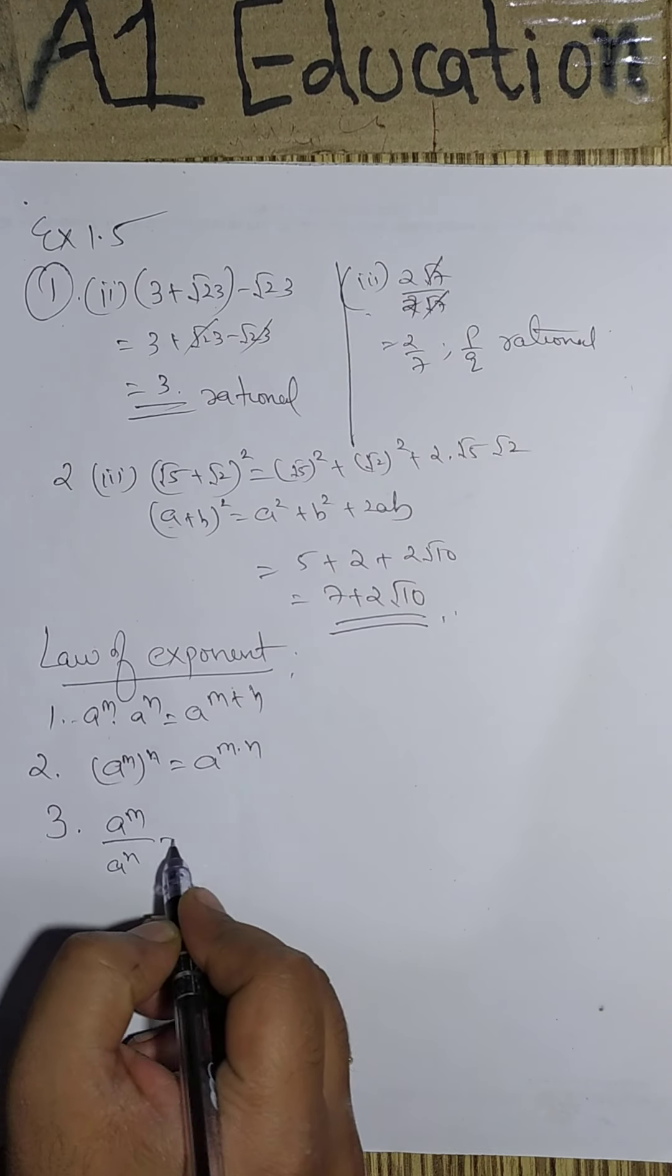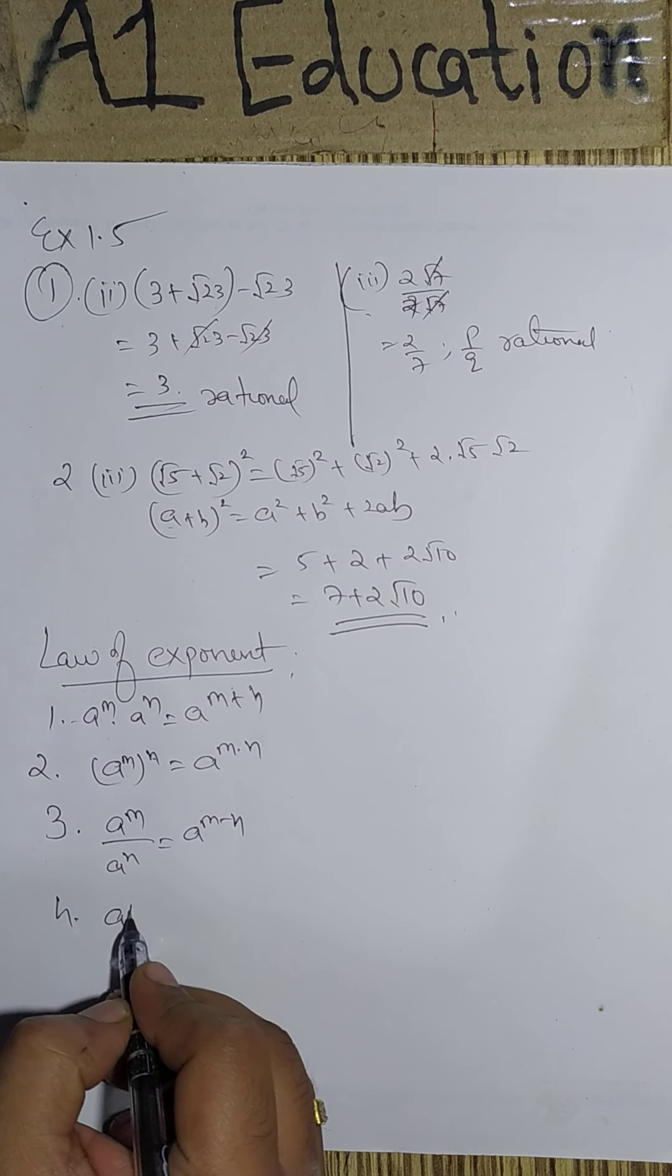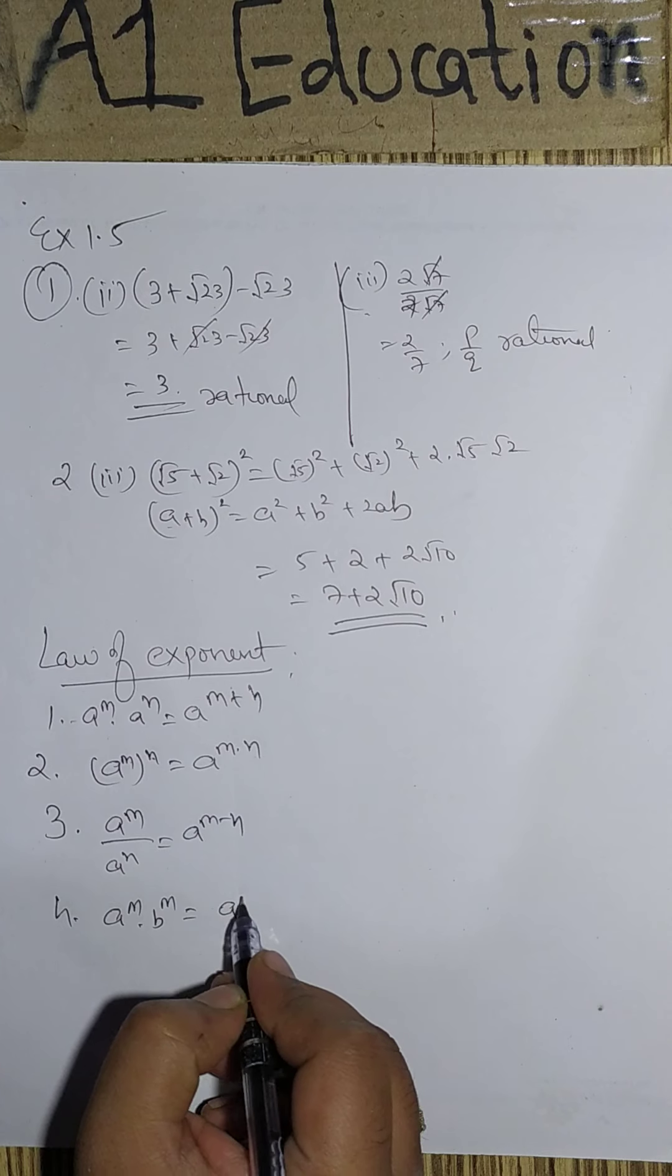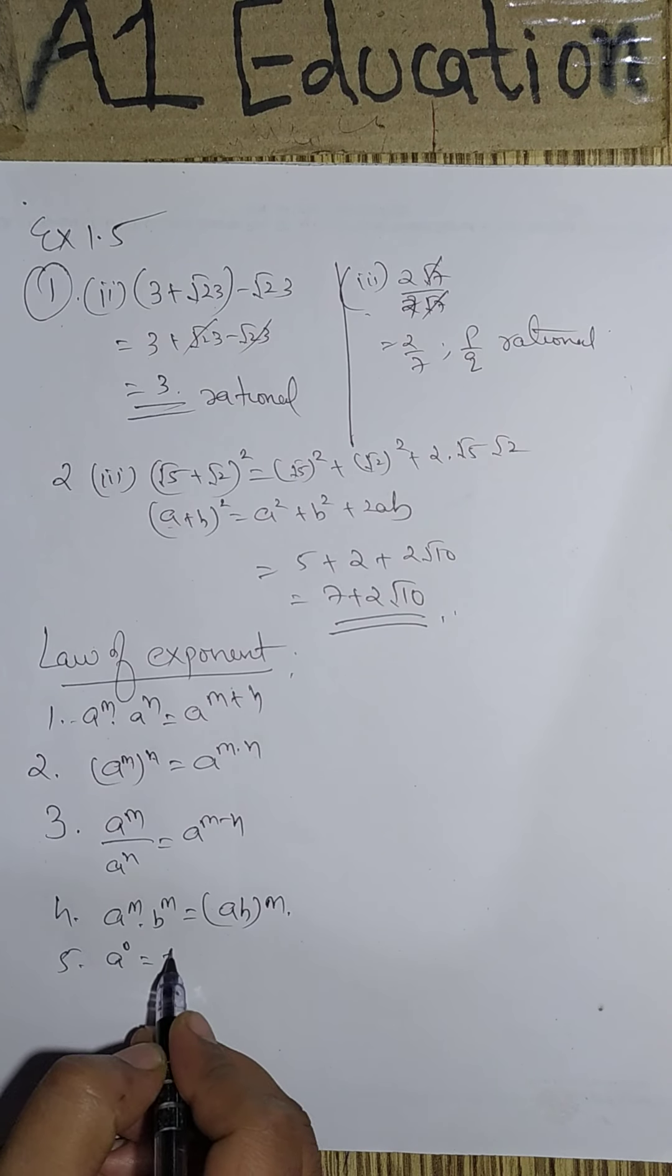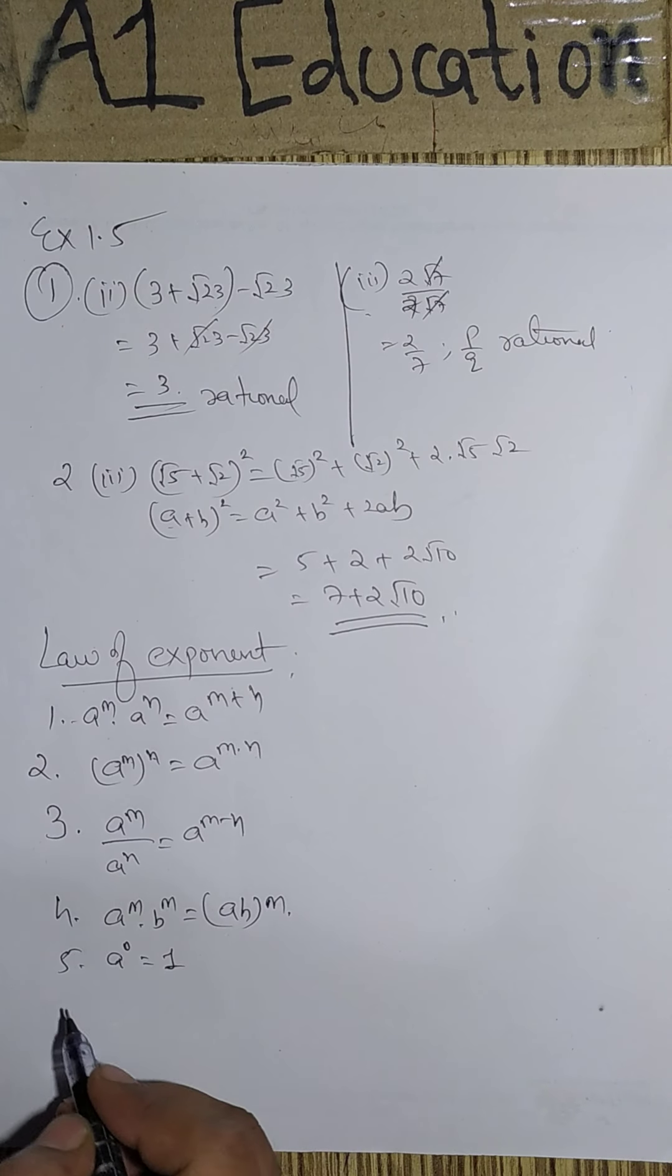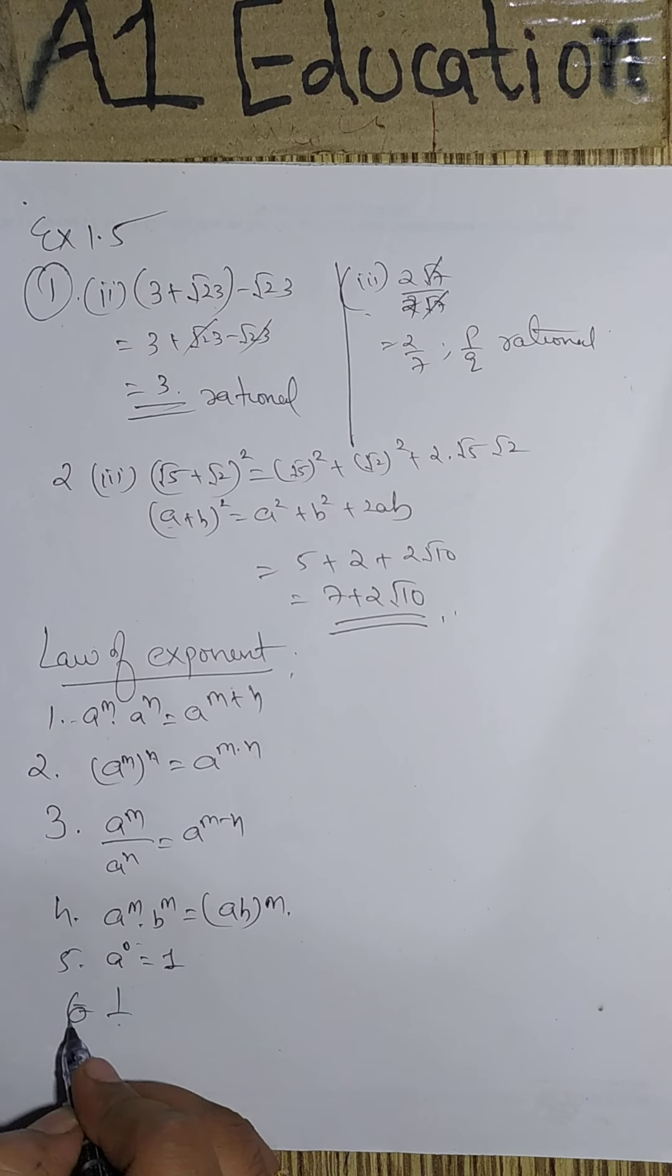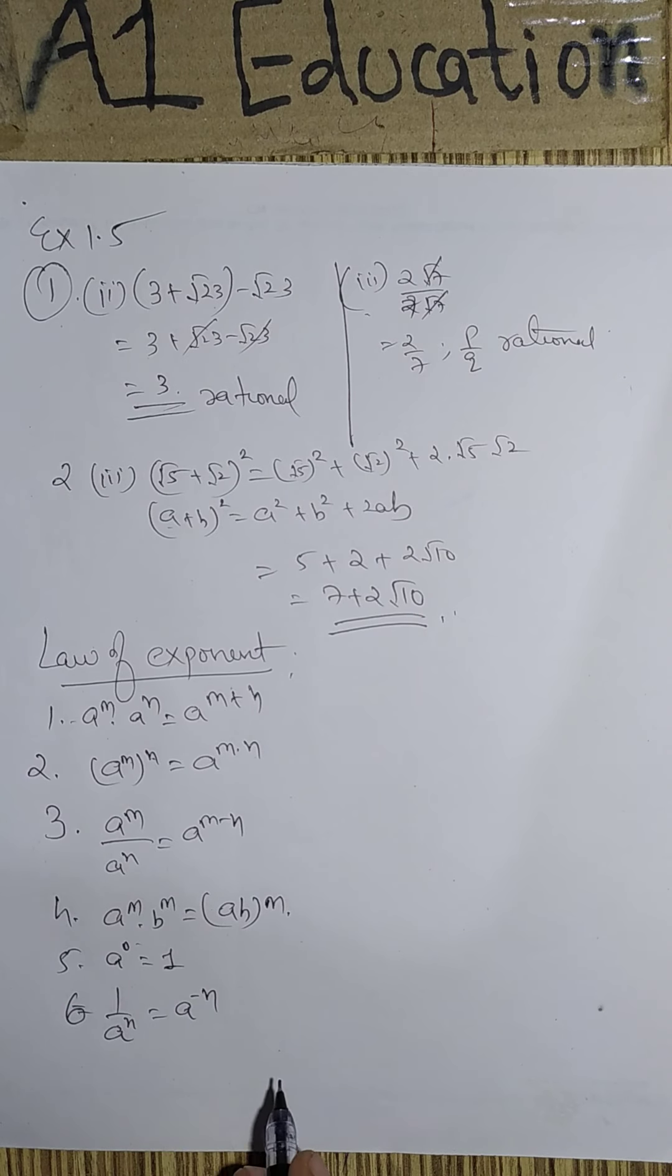a to the power m upon a to the power n will be a to the power m minus n. And fourth one, a to the power m dot b to the power m can be combinedly written as ab to the power m. Then a to the power 0 is 1. Anything raised to the power 0 is always 1. Then 1 upon a to the power n can be written as a to the power minus n.